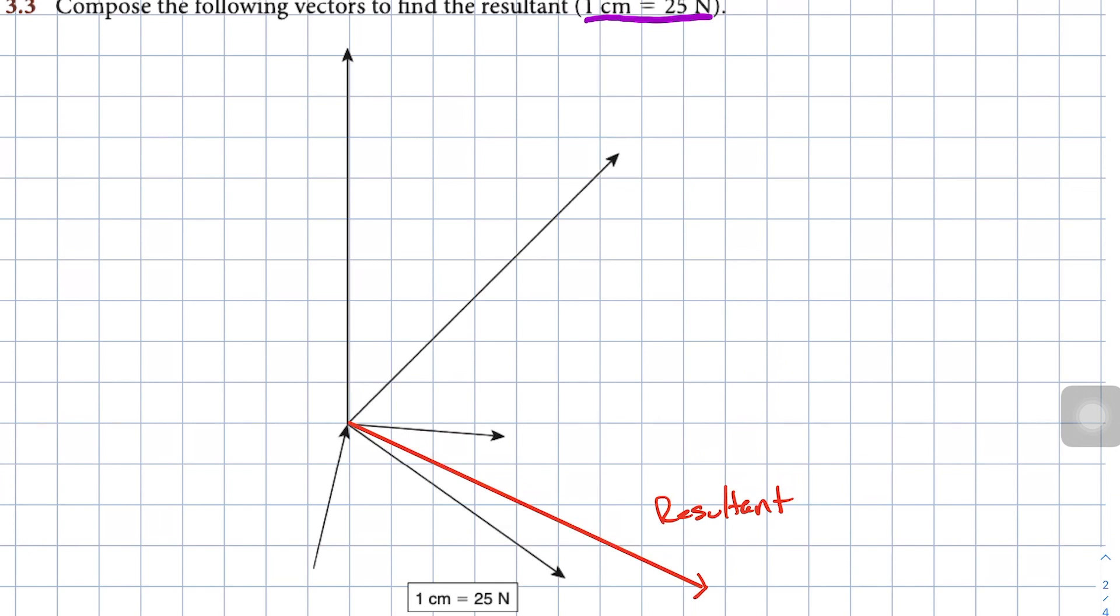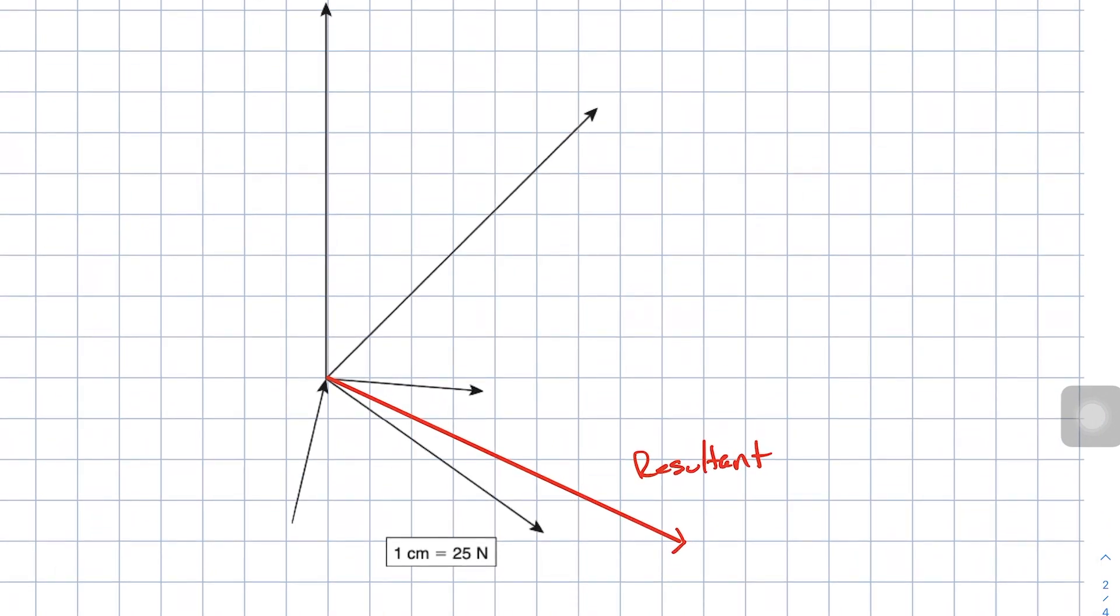These first two, this little guy right here and the one that we just drew, the resultant over here, they are already tip to tail. So I will use those as a starting point and then just move the other vectors so that they are also lined up.